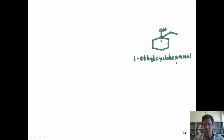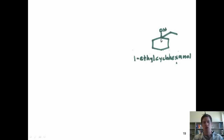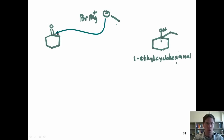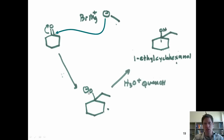Here's the answer to our last Grignard synthesis question. I want to make a tertiary alcohol—which means I have to start with a ketone. Starting with acetone and treating it with an ethyl Grignard: the negative charge comes in, kicks the electrons up, gives the intermediate, which is then protonated in the workup to give the final product.